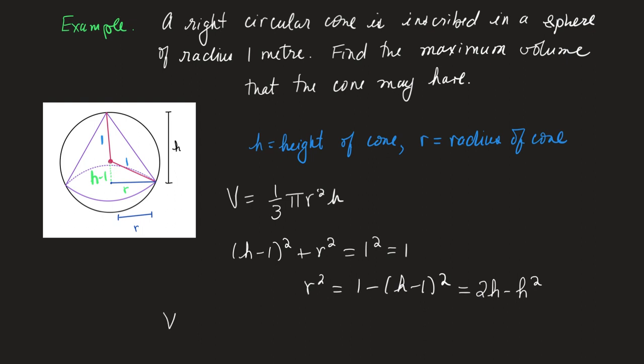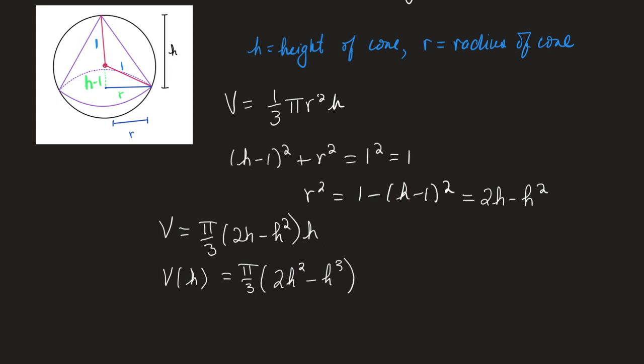Let's go ahead and plug that into the volume formula. So I have V = π/3 times (2h - h²), that's my r² times h. And now I've simplified that so I have V in terms of h. I should think about on what interval h lies.